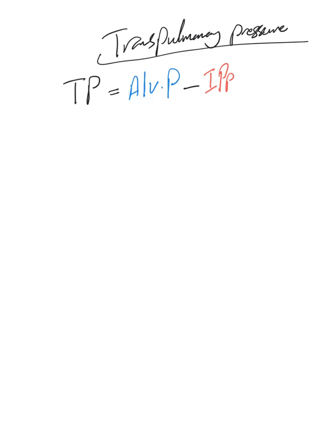Now we know what transpulmonary pressure is — it's the difference between alveolar pressure and intrapleural pressure. What's the importance of this transpulmonary pressure? Alveolar pressure is an expanding force and intrapleural pressure is a collapsing force.